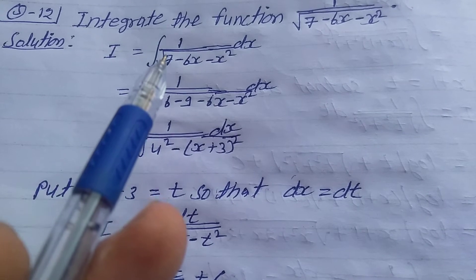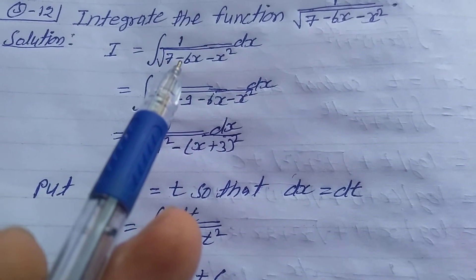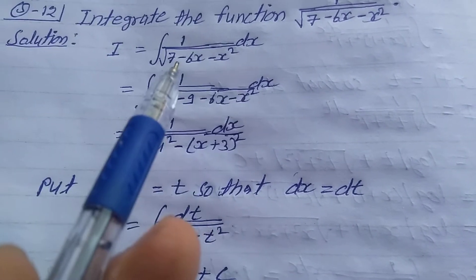Solution: Take I is equal to integration 1 upon root of 7 minus 6x minus x square dx. In the denominator...